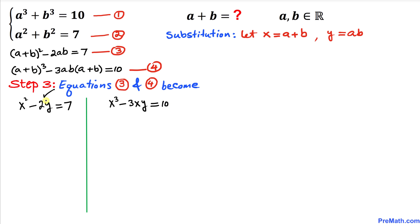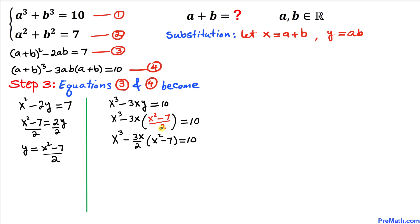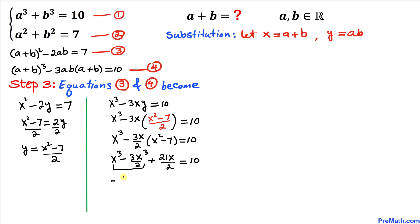Now let's solve for y. Moving terms around gives x² − 7 = 2y, so y = (x² − 7)/2. Substituting this value of y into equation 4 and distributing, then combining like terms, gives us −x³/2 + 21x/2 = 10.